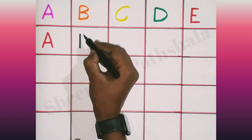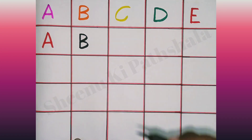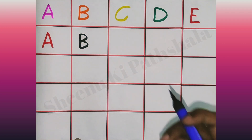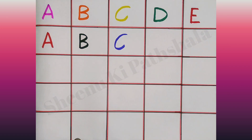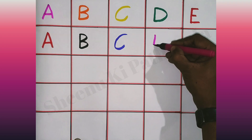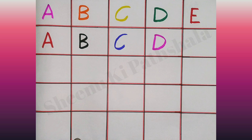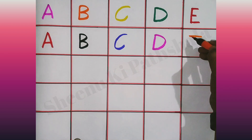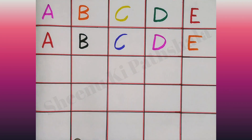B. B for ball. C. C for cat. D for dog. E. E for elephant. E for elephant.